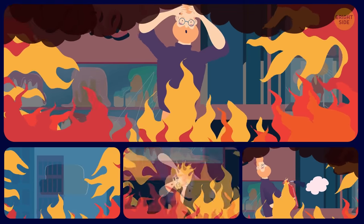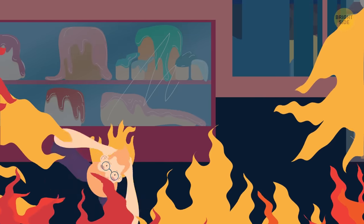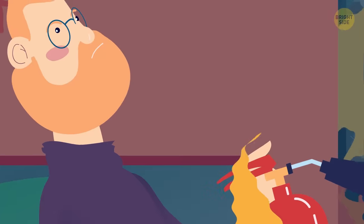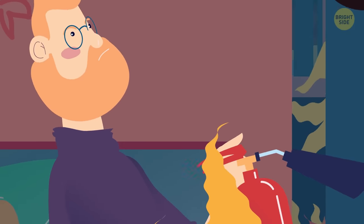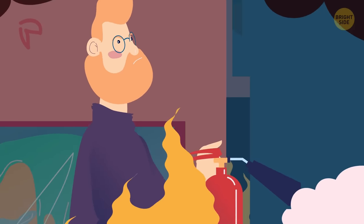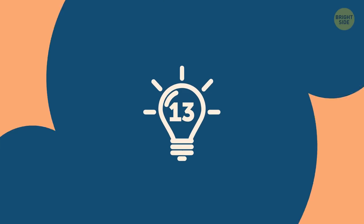The correct answer is B. By breaking a window, you'll let in more oxygen, which will only feed the flames. And if you do have a fire extinguisher, aim it at the base of the fire. It's much more effective.